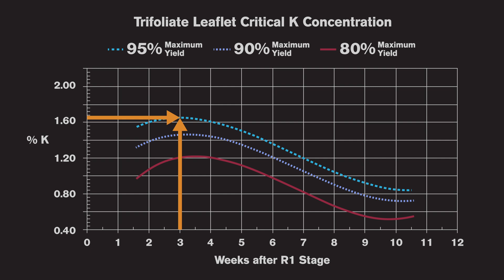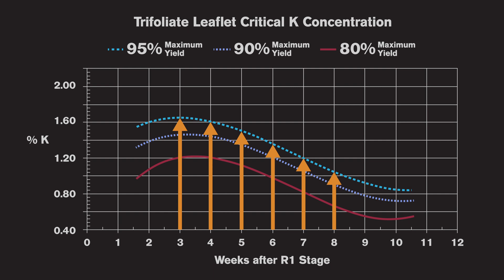This interpretation allows producers to determine when potassium applications may be profitable and ensure that K is not limiting soybean yield. Additional samples may be taken throughout the season to ensure that the trifoliate leaf K concentration is remaining at a level that matches the producer's target yield response.